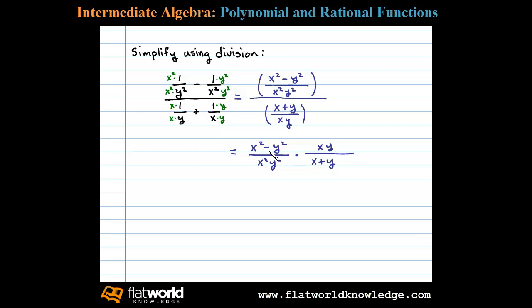Now we can factor the numerator. X squared minus y squared is a difference of squares, so factoring gives us x plus y times x minus y, all over x squared times y squared, multiplied by x y over x plus y.